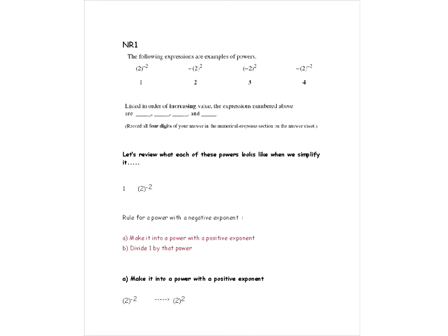The first question is talking about the following expressions as examples of powers, and it says to list them in order of increasing value — in other words, from smallest to largest — and then put it as a four-digit number. What we need to do is change each of these from a power into some other form of number so that we can compare them. Let's review what each of them looks like when we simplify.